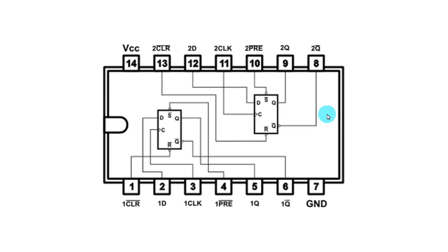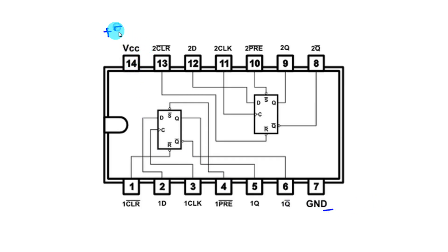For the practical demonstration I will use the first D flip flop. Pin number 7 is ground and pin number 14 is VCC. We will connect plus 5 volts. Now let's see the practical circuit diagram.